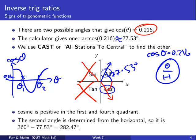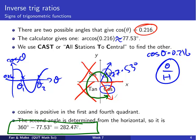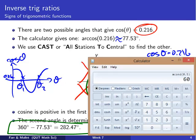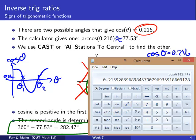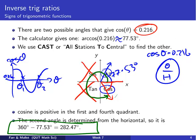The second angle has the same magnitude but goes down from the axis instead of up. Since we want angles between 0 and 360, we go from 0 all the way around: 360 degrees minus 77.53 degrees. That calculation gives us 282.47 degrees. You can check that on your calculator: cosine of 282.47 is approximately 0.216. So those are the two correct angles. It's a little involved, but with practice it starts to make more sense.